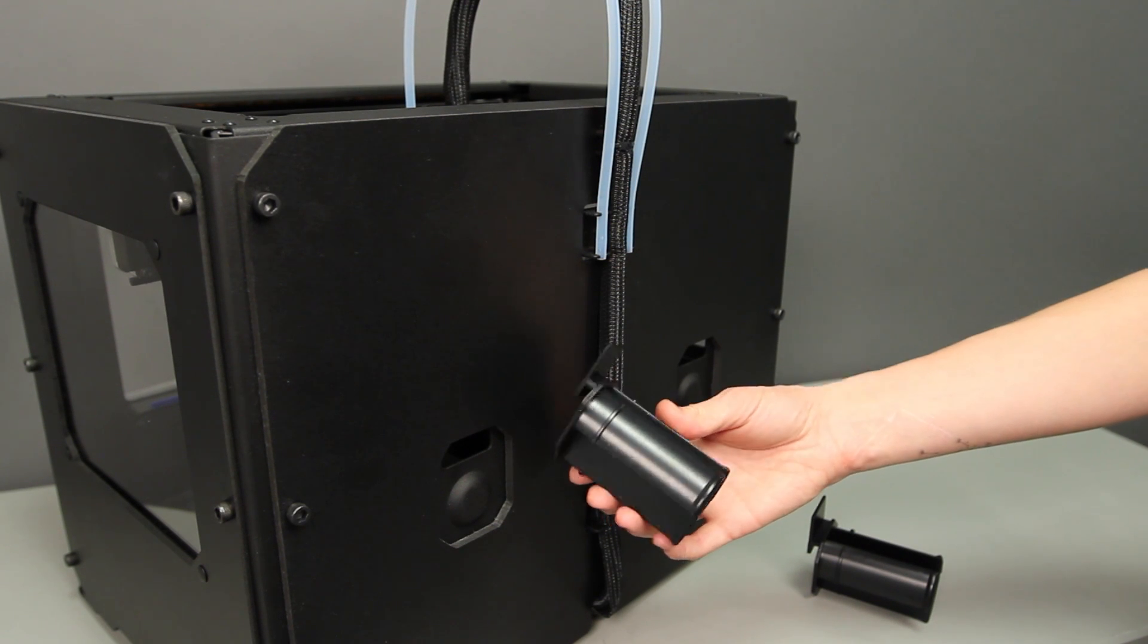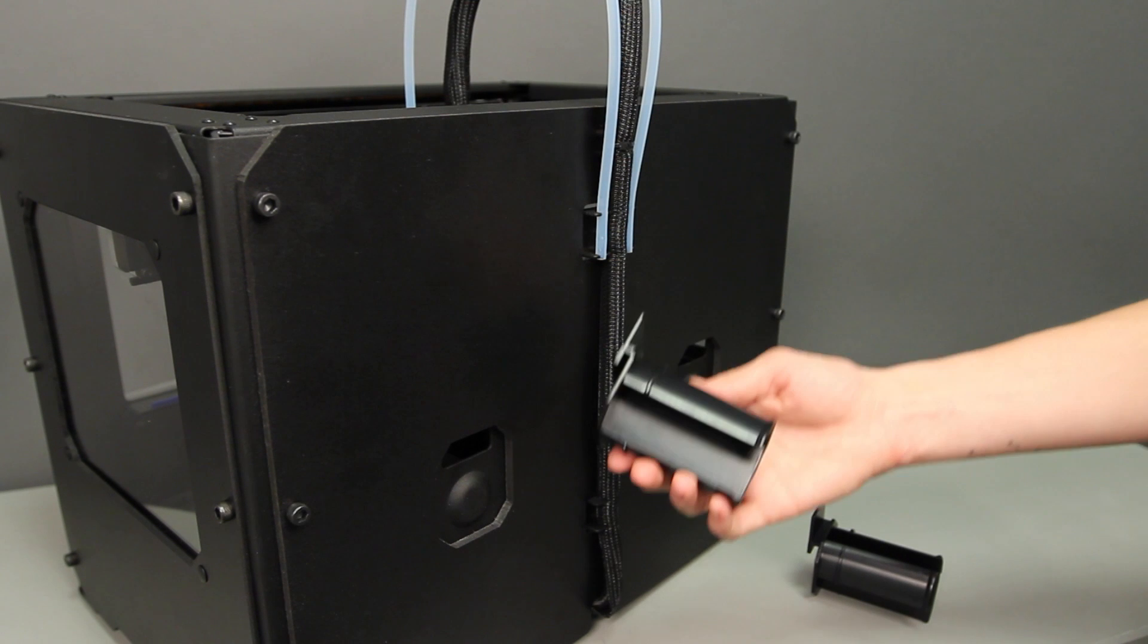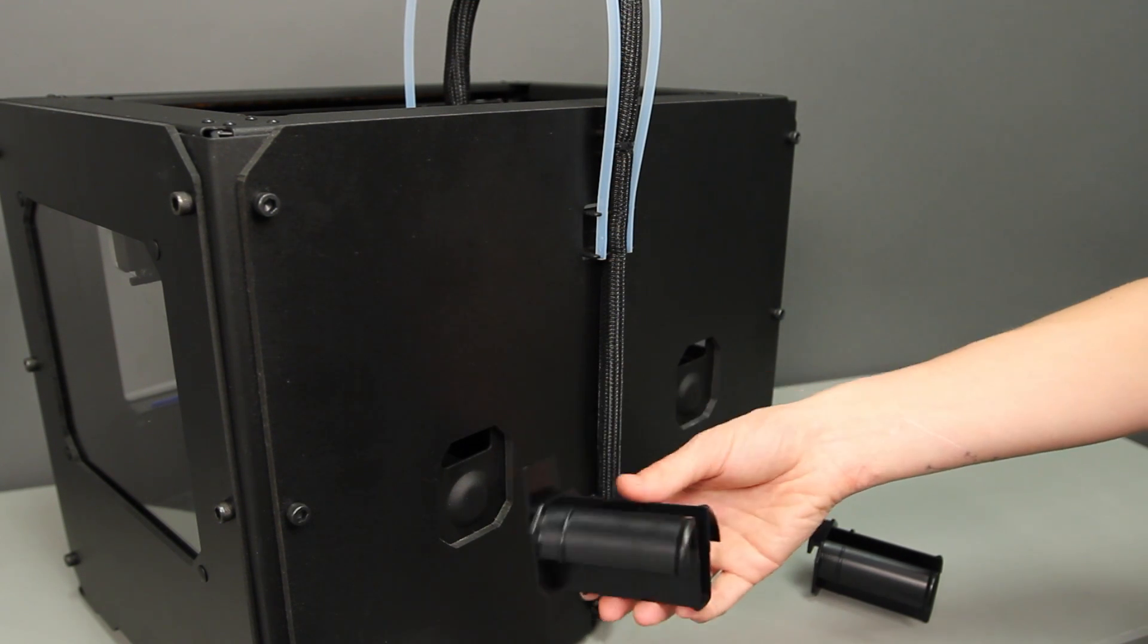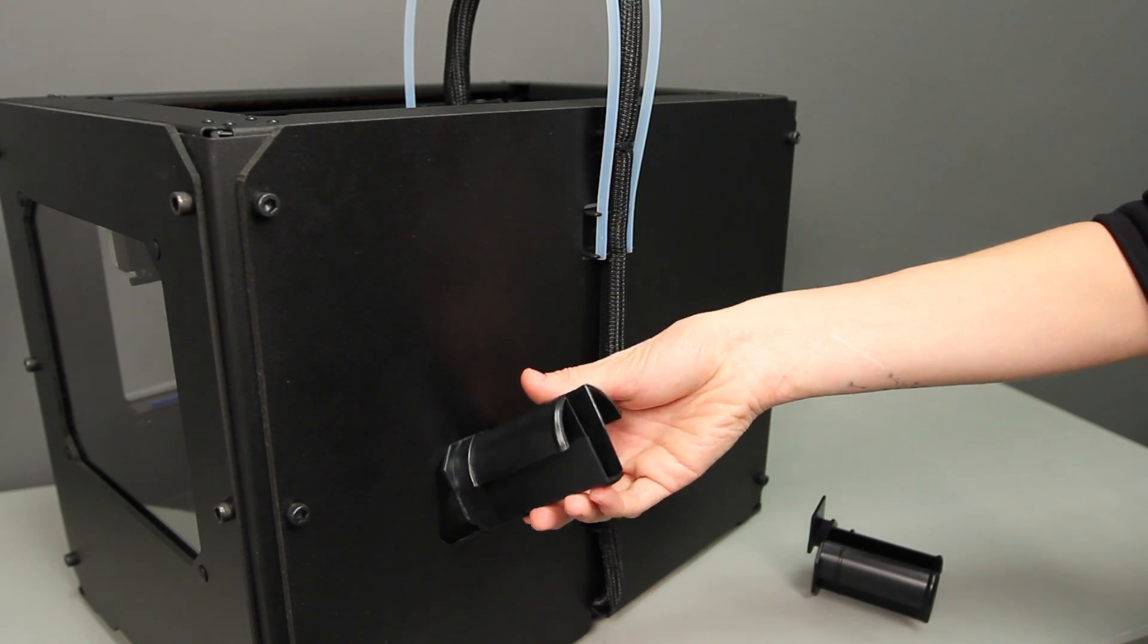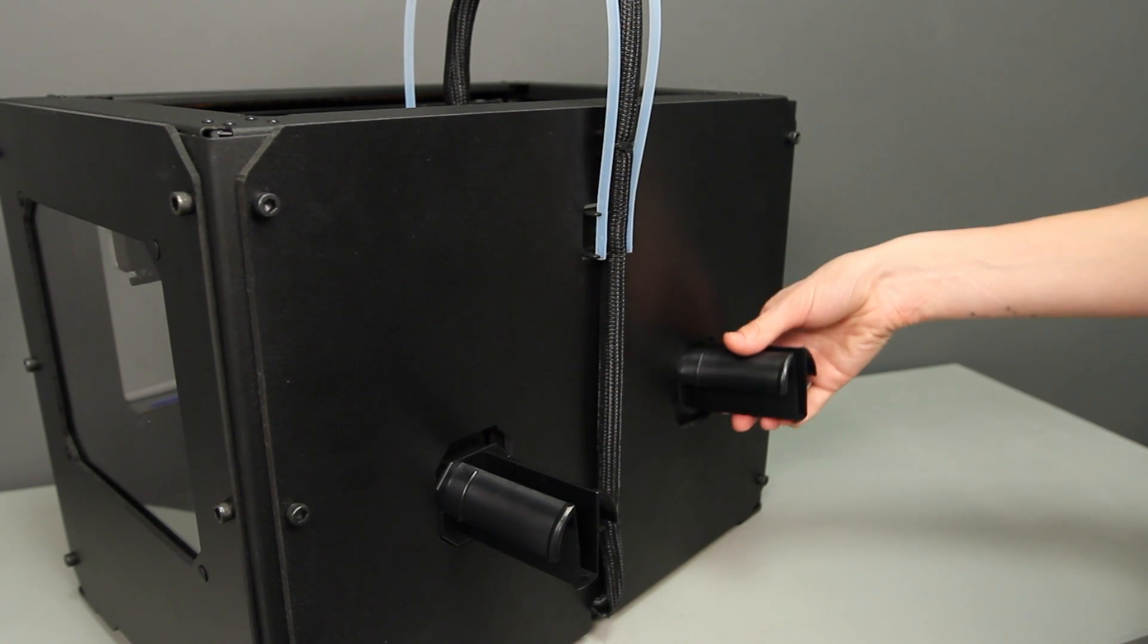Now locate the spool holders and install them into the two rectangular openings at the back of your MakerBot Replicator 2X. Just tilt the spool holder like this, insert it into the rectangular opening, straighten and press down.